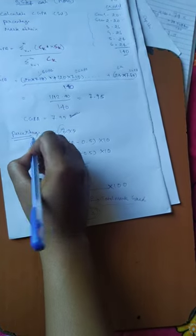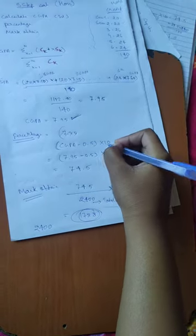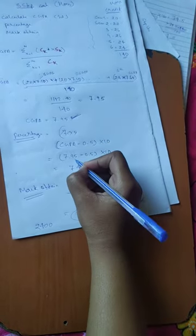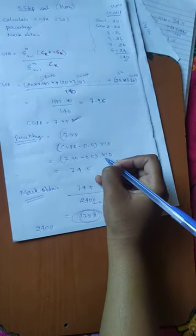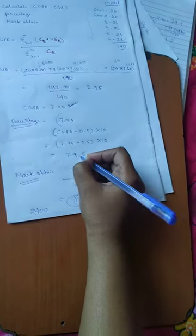If you add percentage, then you will get CGPA minus 0.5 into 10. So, 7.95 CGPA minus 0.5 into 10. Overall, 74.5.